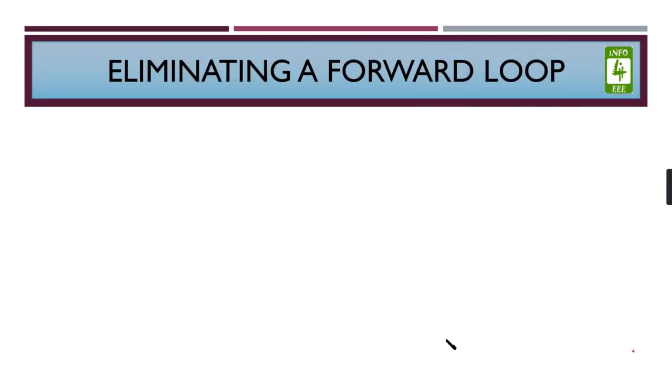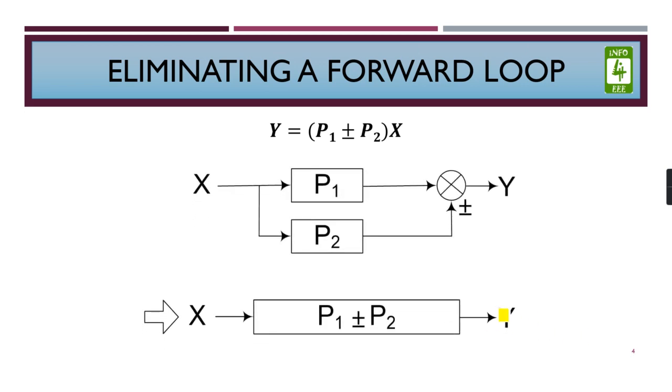The second thing is eliminating a forward loop. So if these two blocks are in parallel, if these two blocks are in parallel and they are getting summed up here at the summing point, then if this sign is plus we will use plus. If minus, then we will use minus.